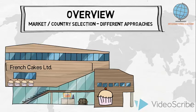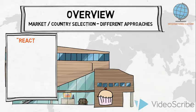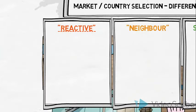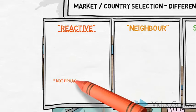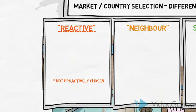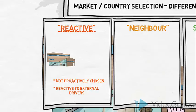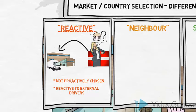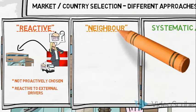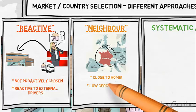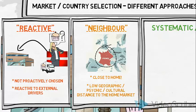Although no two companies follow the exact same process, as marketers we often talk about three different types of market selection approaches. The reactive approach explains those situations where international markets are not proactively chosen — the selection process is instead purely reactive to external drivers. For example, if a wholesaler in Denmark contacts French Cakes inquiring about a supplier of French cakes and desserts, this could be the first step to a reactive market selection. The neighbour approach explains those situations where international markets close to home markets are selected, with selection criteria being low geographic, psychic, or cultural distance to the home market.